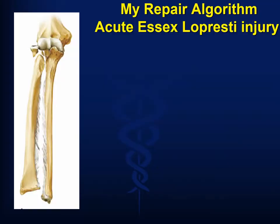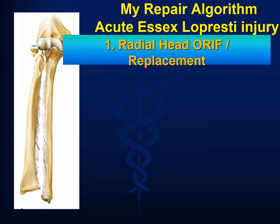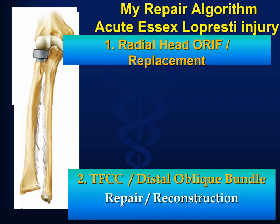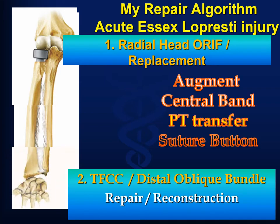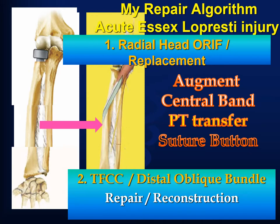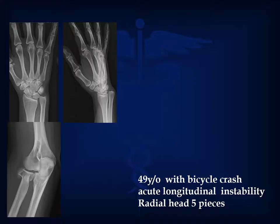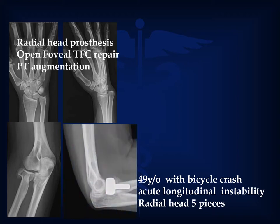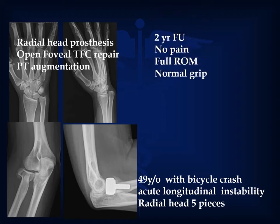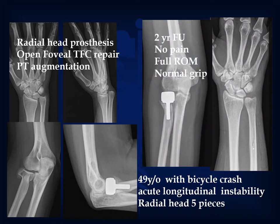In summary, my repair algorithm for the acute Essex-Lopresti injury is: at the elbow, radial head repair or replacement; at the wrist level, repair of the triangular fibrocartilage or reconstruction of the distal oblique bundle; at the central band level, augmenting the central band with a pronator teres transfer or a suture button. Following those principles led to a successful outcome when this 49-year-old with a bicycle crash sustained acute longitudinal instability with a comminuted radial head. He was treated with a radial head prosthesis, open foveal TFC repair, and pronator teres rerouting augmentation of the central band. At a two-year follow-up, he showed no pain, full range of motion, and normal grip.